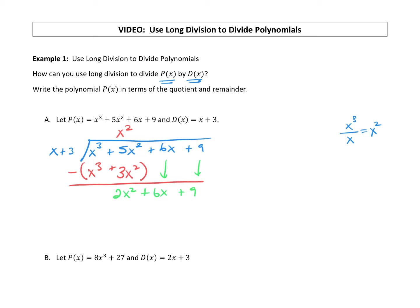We go back to take the leading term divided by the leading term. Our polynomial has been divided down, so now our leading term is 2x². We take 2x² divided by the leading term of our divisor, which is x: 2x² divided by x leaves us with 2x. So plus 2x goes on top. Then we take that 2x and multiply it through x plus 3: 2x times x is 2x², and 2x times 3 is positive 6x.